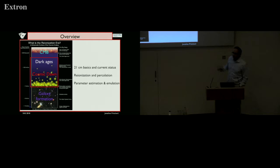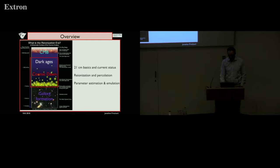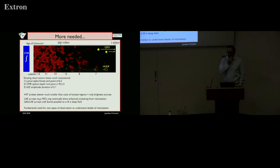In this talk I want to say a little bit about the basics of the 21-centimeter line, say something about the current status of observations which is starting to get quite interesting, and then touch upon two topics: looking at reionization as a percolation process, and thinking about how we'll use observations of the power spectrum to estimate parameters and some of the challenges in doing that.